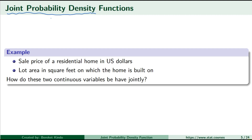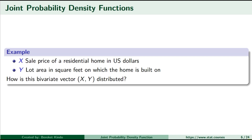Let's consider two random variables jointly. The first random variable is the sale price of a residential home in US dollars, and the second random variable is the lot area in square feet on which the home is built. Suppose sale price is denoted by the random variable X and lot area is denoted by the random variable Y. How is this bivariate vector (X, Y) distributed? That is the question we seek to answer in this lesson.